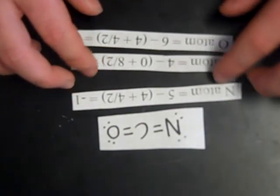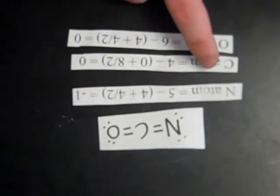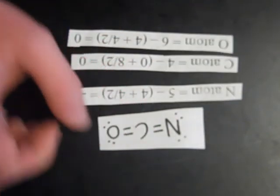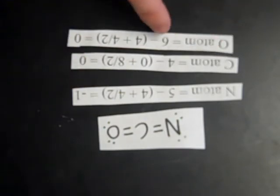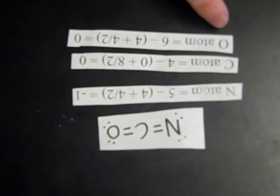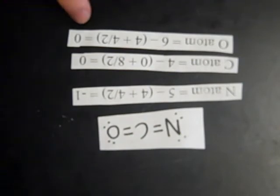Lastly, we look at the third structure for the cyanate ion. The N atom is five minus four, because we have two unshared pairs, plus four over two because we have two bonding pairs, giving it a minus one charge. The carbon atom has four minus zero unbonded, plus eight over two because it has four total bonds, giving it a charge of zero. The oxygen atom has six minus four because of two unshared pairs, plus four over two because it has two bonds, giving it a charge of zero. Adding them all together, you still get minus one.